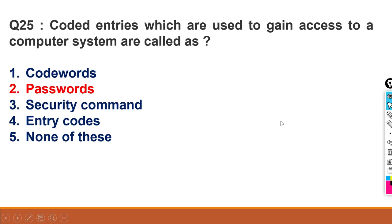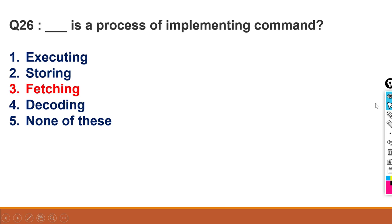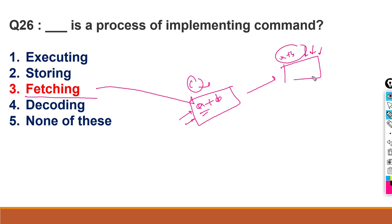Coded entries which are used to gain access to a computer system - what do we call the coded entries? Passwords. Dash is a process of implementing a command, so what do we call it? Fetching command. If we want to make a C in the C language, we do programming in the C language, we write a program to add two numbers. When we are implementing this, we are going to implement the process, we will say fetching. When it is fetched and this process is happening, then we call it execution. Then it is execution mode when it is processing, and when it comes to your result, then we call it implementation.